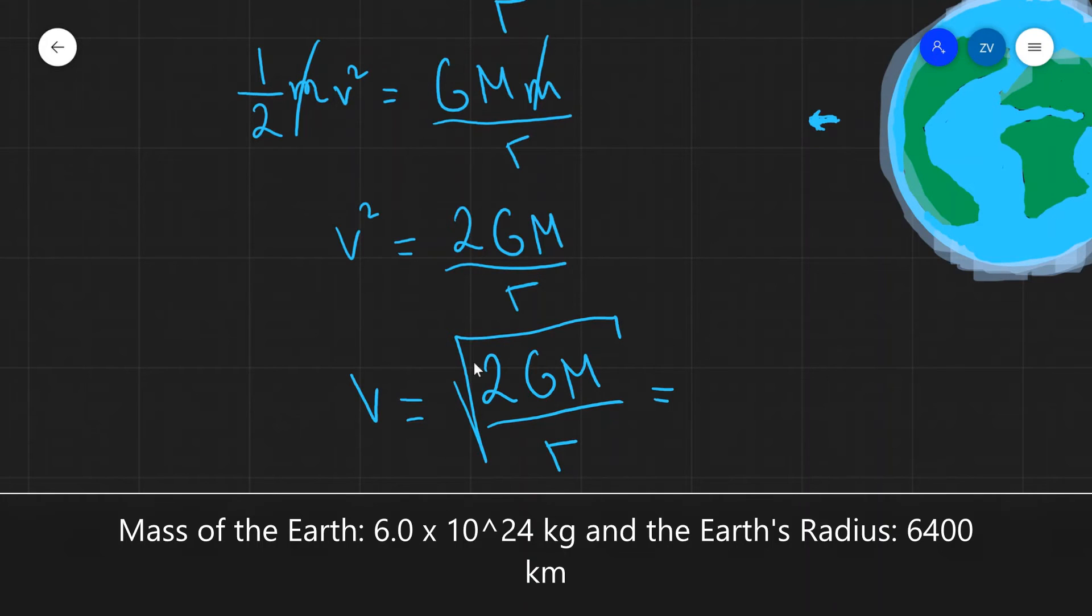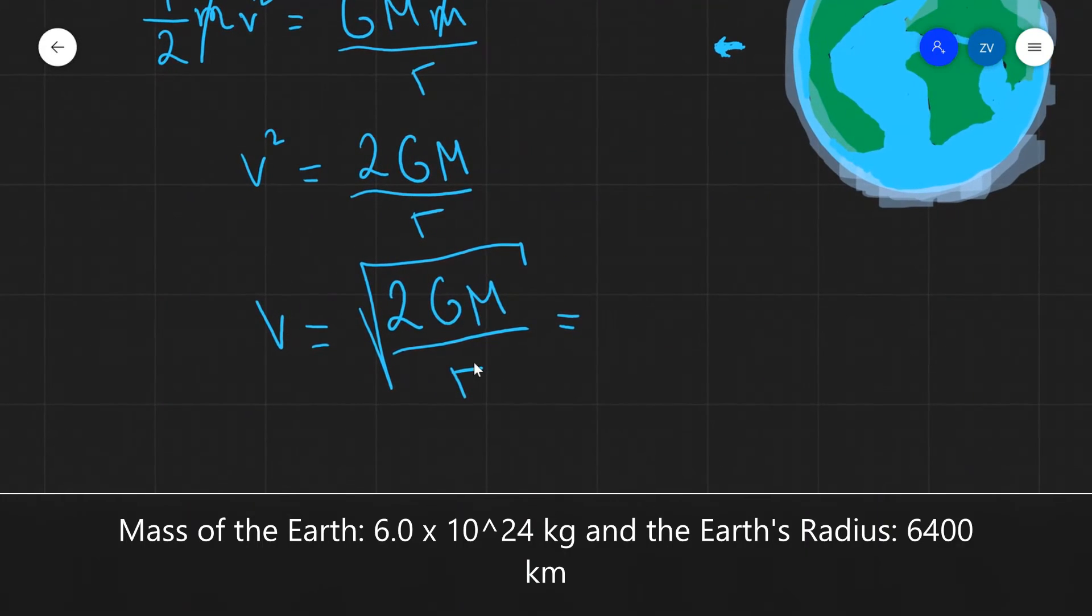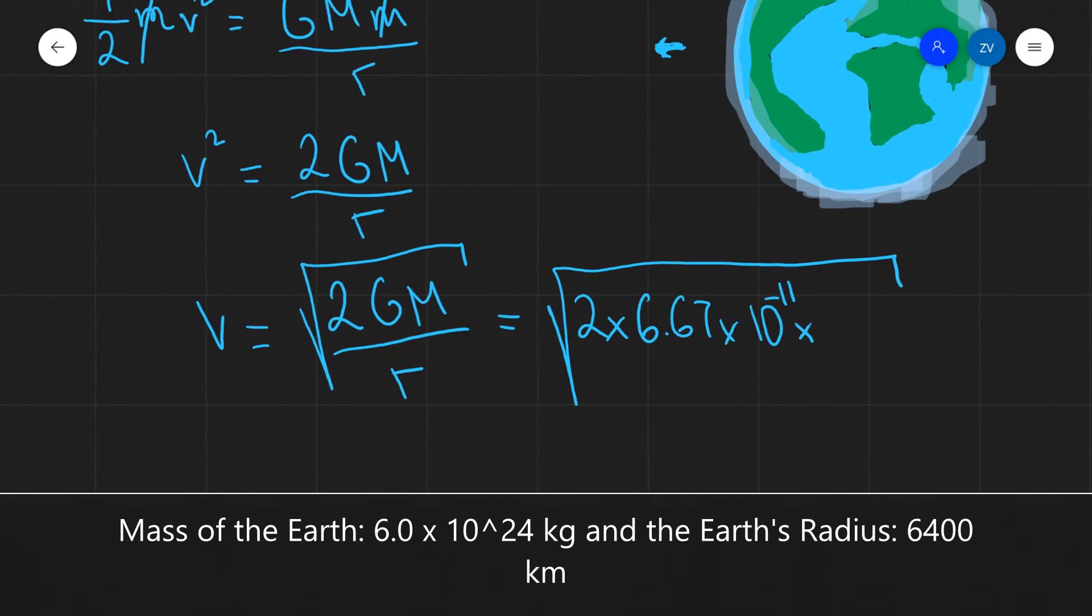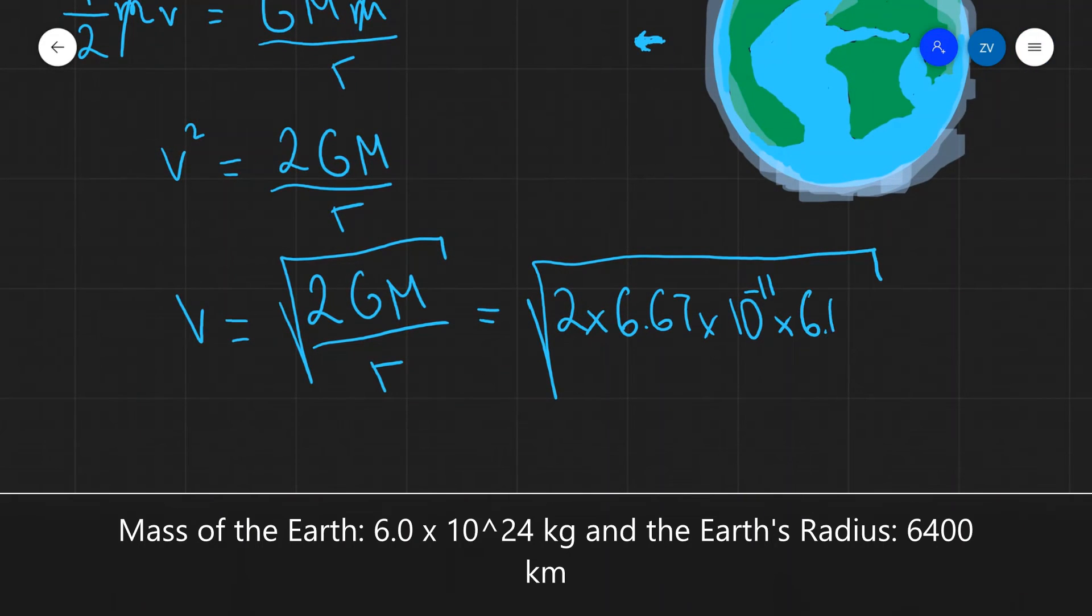Let's plug in some numbers. This equals the square root of 2 times G, which is 6.67 × 10⁻¹¹, times the mass of the Earth, which is 6.0 × 10²⁴ kilograms.